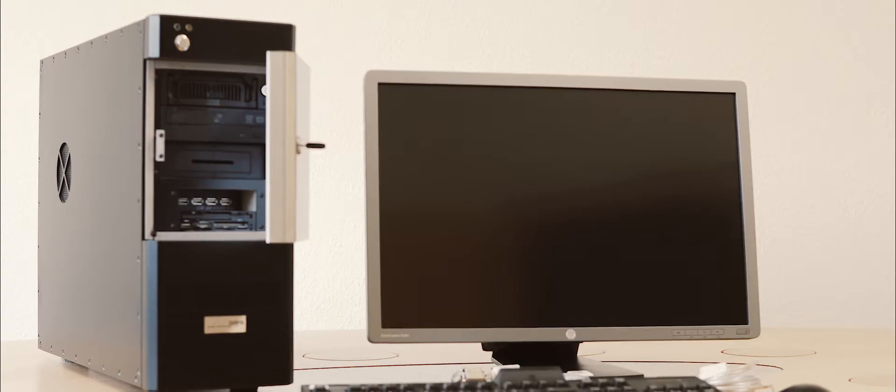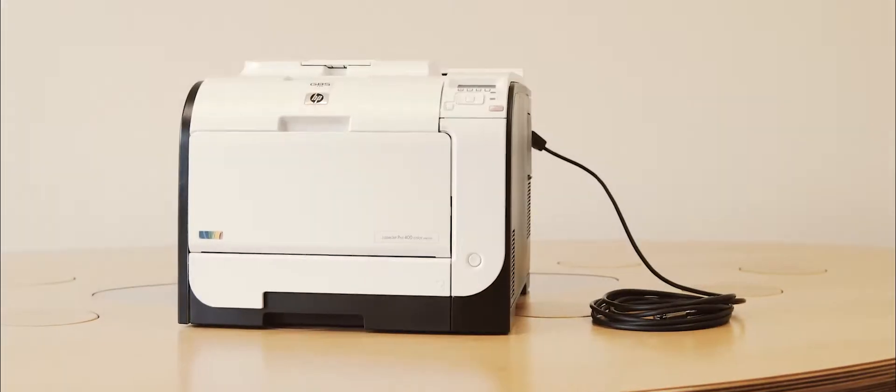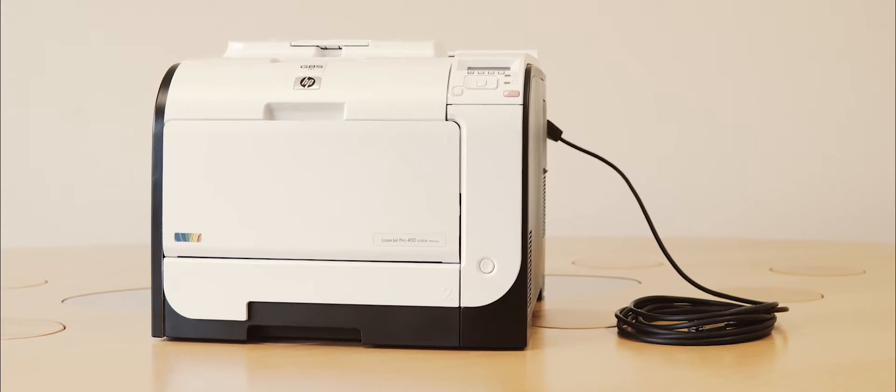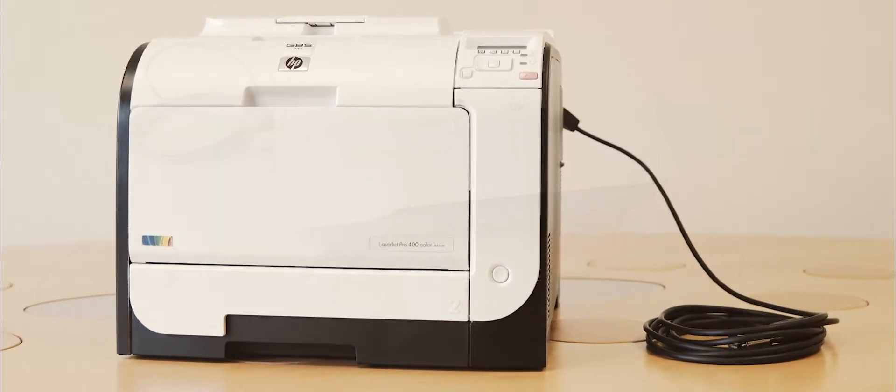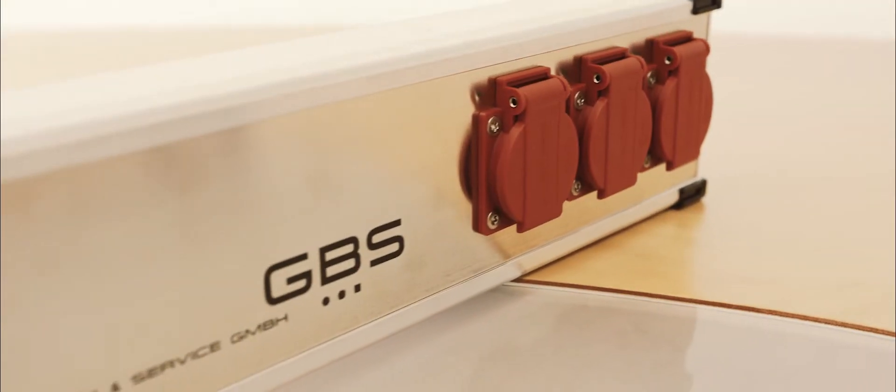GBS develops and manufactures eavesdropping-secured IT equipment such as workstations, printers, scanners, and Tempest powerline filters which are accredited for processing classified information by the German National Tempest Authority.